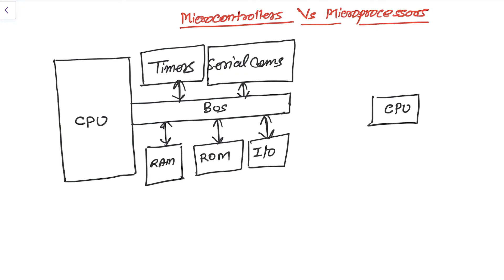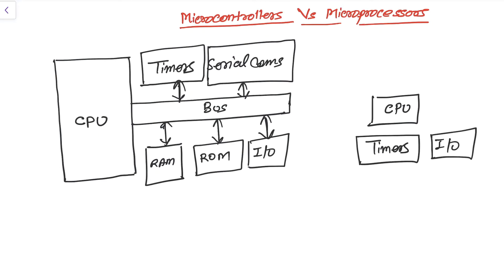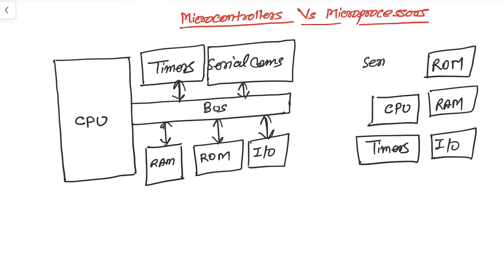A microcontroller contains its CPU, its timers, input and output ports, its RAM, its ROM, serial communication, and other peripherals — all in a single chip itself.